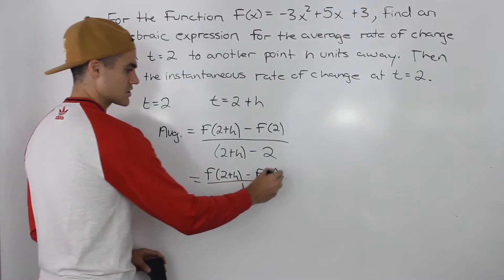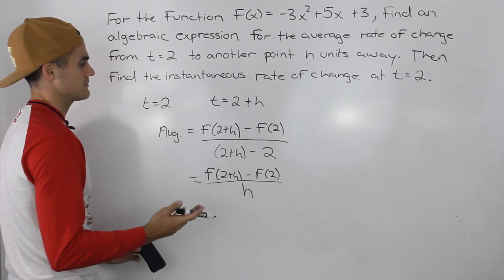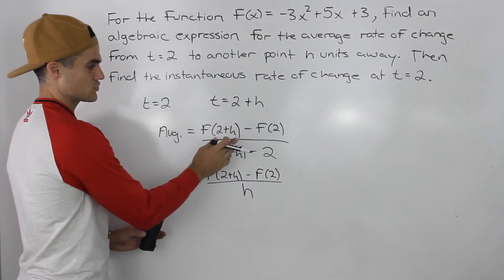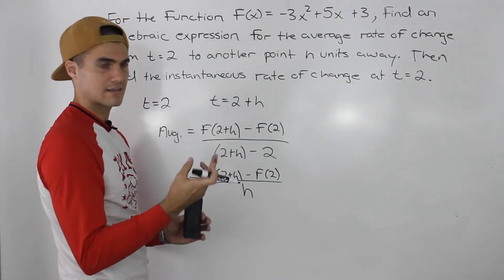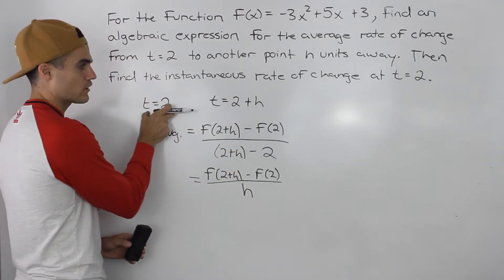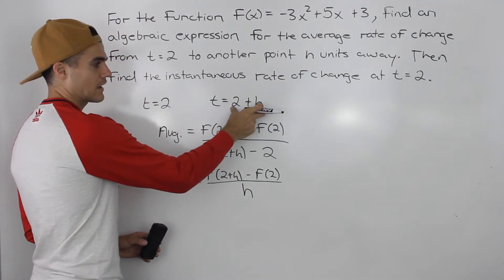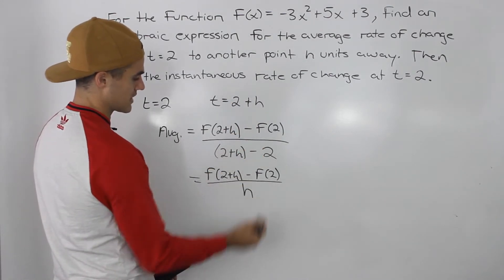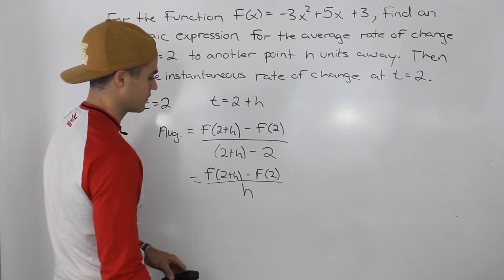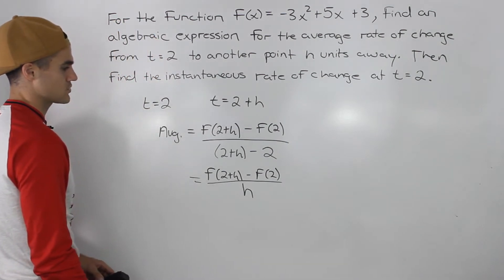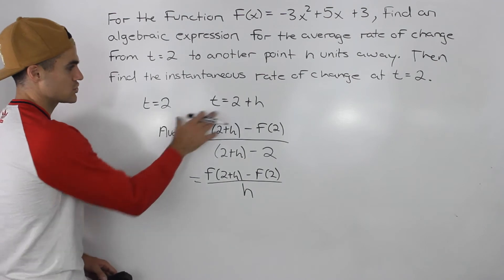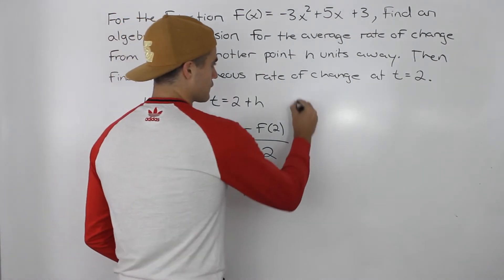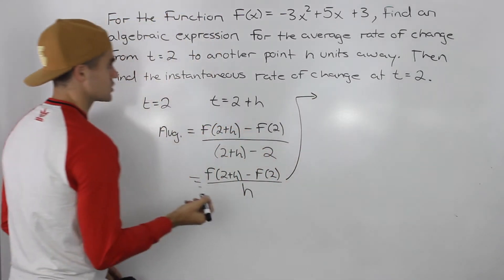Notice how this is now just the difference quotient. If you remember, the way we derived the difference quotient formula is by finding the average rate of change at the t value we're working with and adding another t value h units away. The 2's cancel out on the denominator and we're left with h, which is the same as the difference quotient. But we're still finding the average rate of change between these two points.